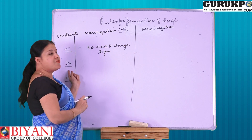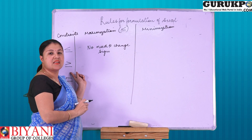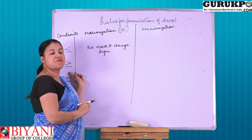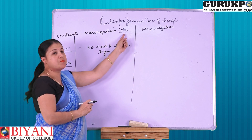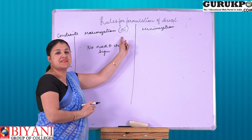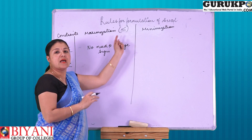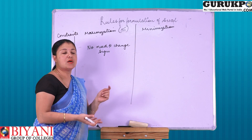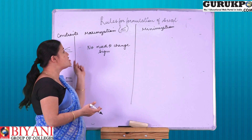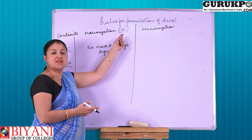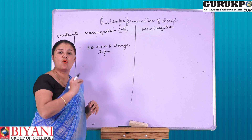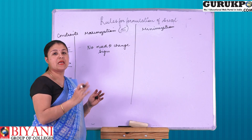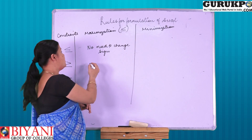Now, if the problem is in minimization form, then we have to convert the problem to maximization sign. In order to convert the minimization sign to maximization, we have to multiply the whole equation by a negative sign.